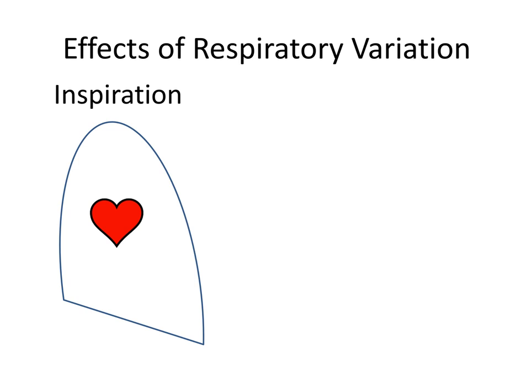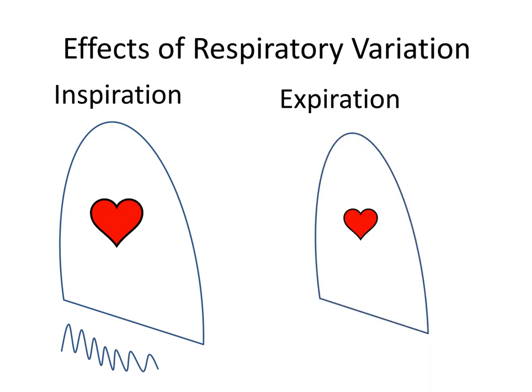These changes are depicted in the simplified cartoon diagram on the left. As you can see, the pressure waveform as measured by the pulmonary artery catheter decreases in relation to the inspiratory phase, where the intrathoracic pressure is decreasing relative to atmospheric pressure. Expiration has the opposite effect: the alveolar pressure is increasing as lung volume decreases, causing a decrease in venous filling pressure. The pressure waveform as measured by the pulmonary artery catheter increases in relation to the expiratory phase, where the intrathoracic pressure is increasing relative to atmospheric pressure.